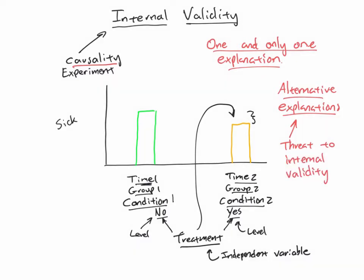There are different types of threats to internal validity that depend on the particular way we're setting up our experiment. If we're doing a comparison between groups — where the different conditions are really different groups of people — we can get issues like: maybe the people in one group have better immune systems. And if they have better immune systems, then that difference — them being less sick — might be due to those pre-existing characteristics rather than to our treatment. So that is an alternative explanation, and therefore it's a threat to internal validity.